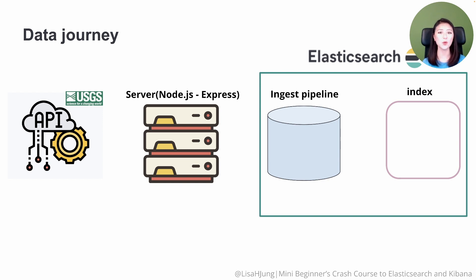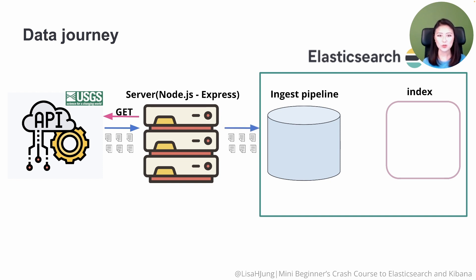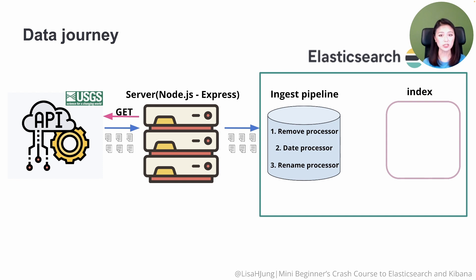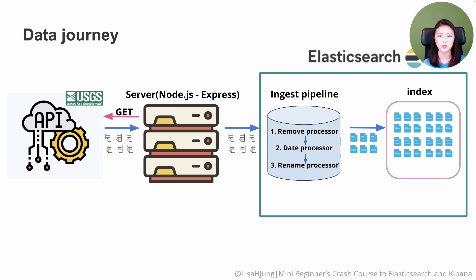Before we get started, let's talk about the data journey for our app. We're building an app where users could search for earthquake data stored in Elasticsearch. In the next episode, we'll set up our server to retrieve the data from the USGS API and send the data to the Elasticsearch Ingest Pipeline. The Ingest Pipeline is used for data transformation. It consists of a series of configurable tasks called processors, and each processor performs a specialized task — for example, it could remove fields, extract values from text, enrich your data, and so on. Each processor runs in the order you set them up and makes specific changes to the incoming documents. After the processors have run, Elasticsearch will add the transformed documents into the earthquake index.